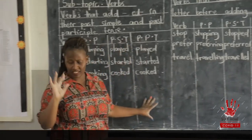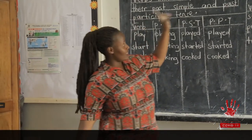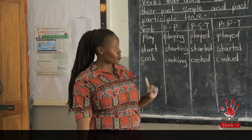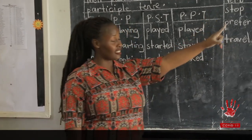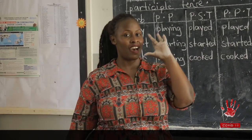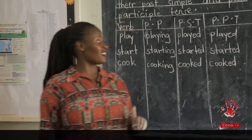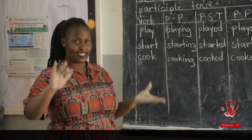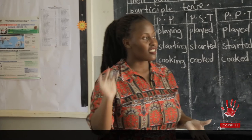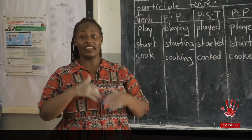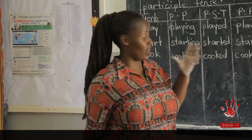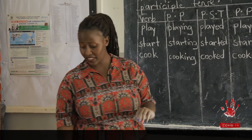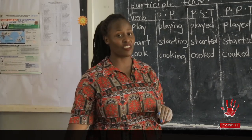Those are some examples of regular verbs that add ED by doubling the last letter. We must know that when doubling the last letter, these verbs must end with a stressed syllable. So to summarize: some words add D, some add IED, some add ED, and others add ED by doubling the last letter. I hope you understand this work. Thank you for learning, and I hope to see you next time.